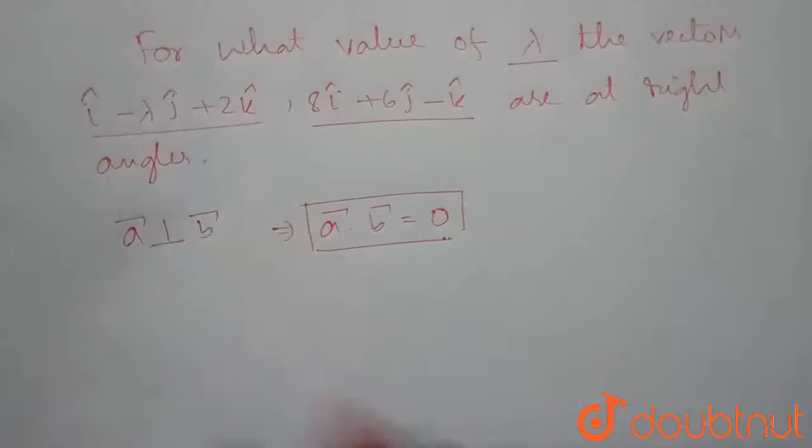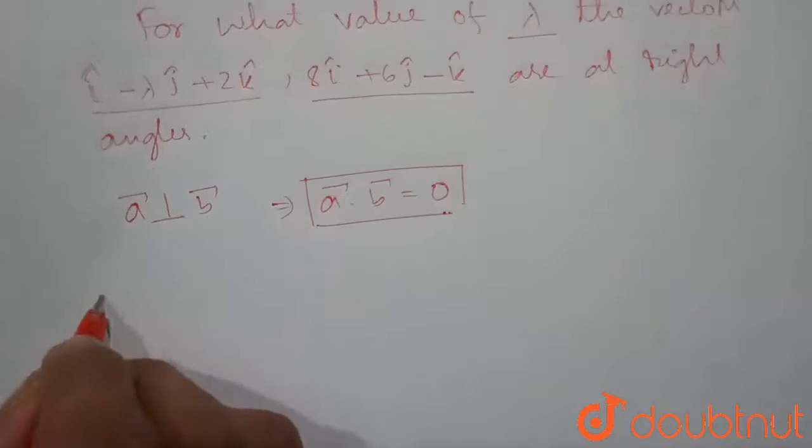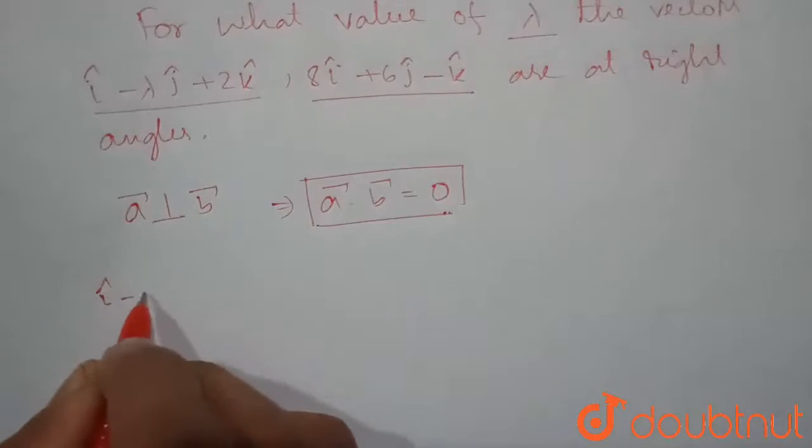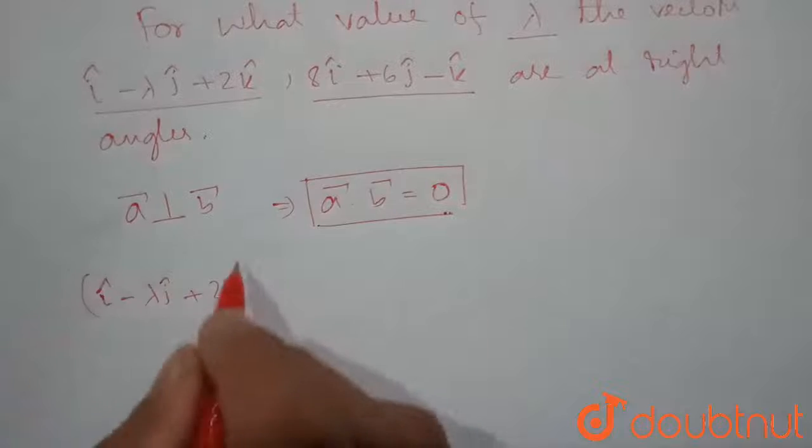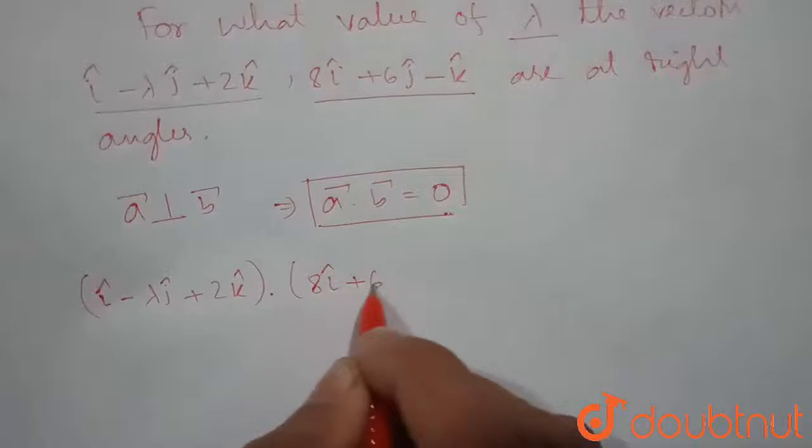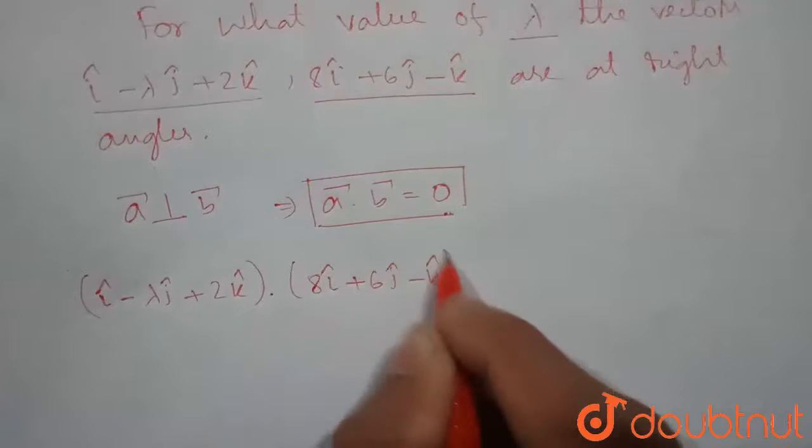So here let us calculate the dot product of these two vectors. We can write i cap minus lambda j cap plus 2k cap dot 8 i cap plus 6 j cap minus k cap.